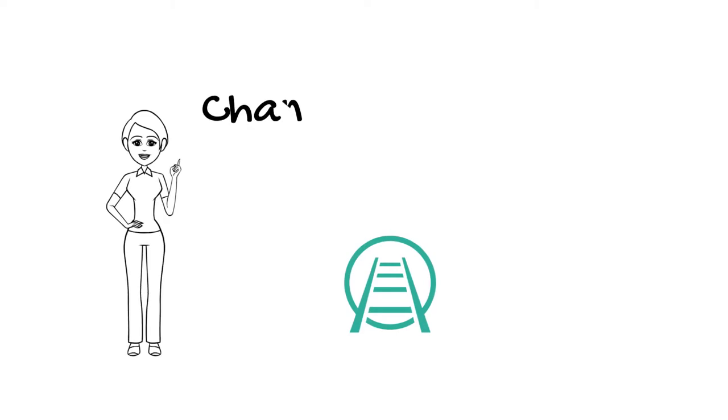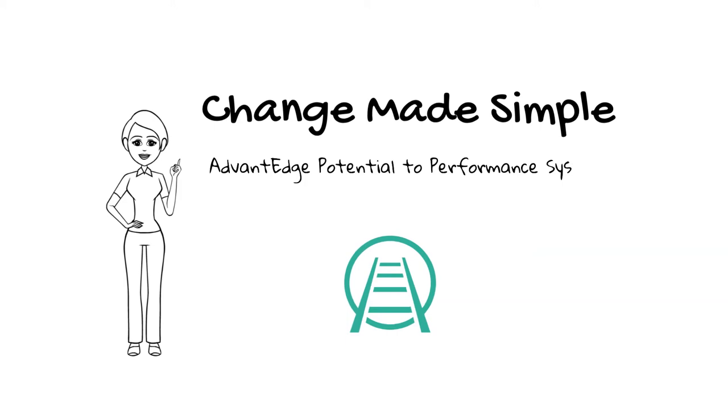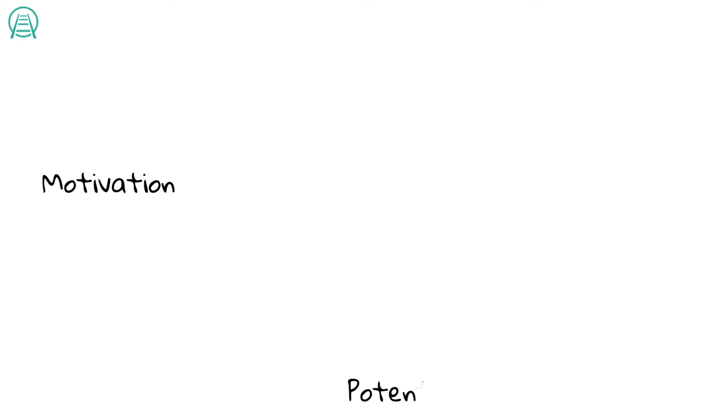Change is made simple. Let me explain about the advantage potential to performance system model. Action or performance happens when three things come together at the same moment: motivation, the potential to do the action, and a trigger.